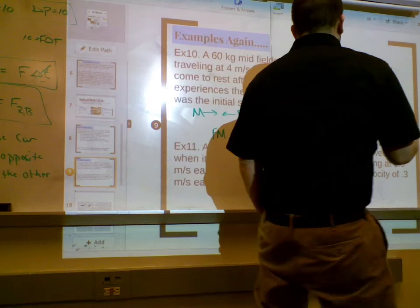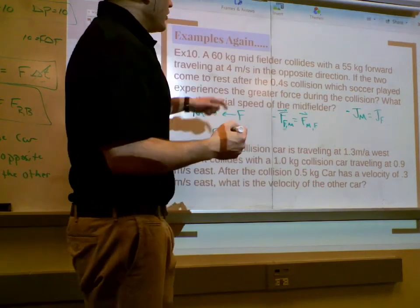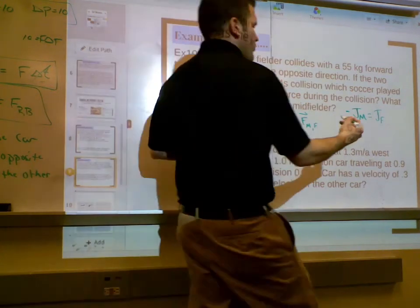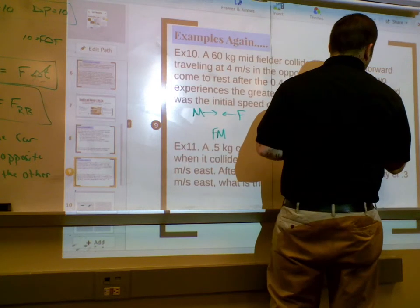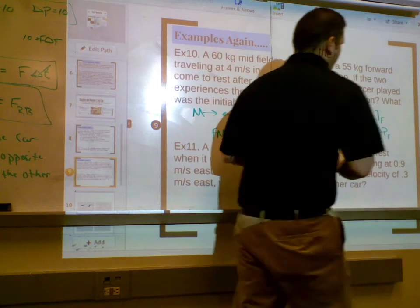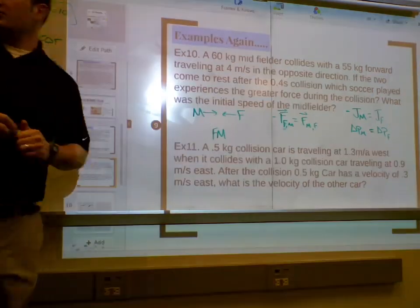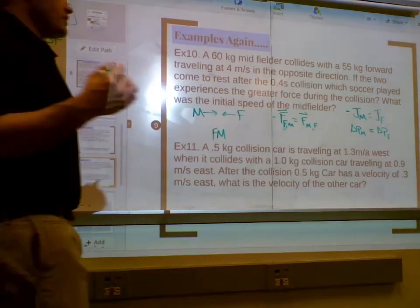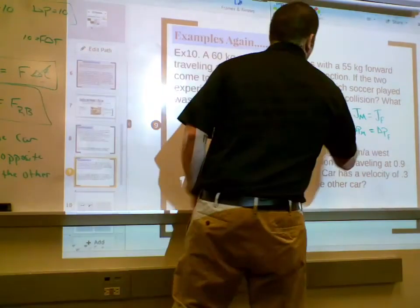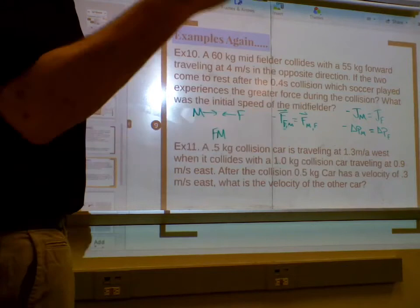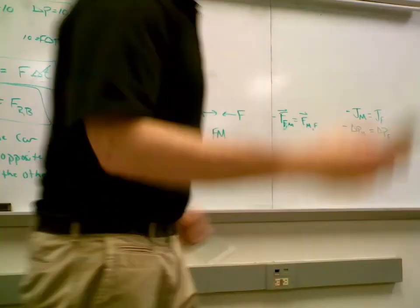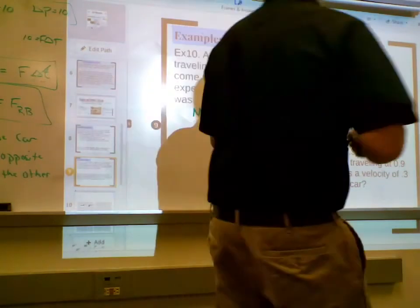The impulse on the midfielder equals the impulse on the forward. It's just one is in the opposite direction, right? So one is negative. So for the forward, impulse is also change in momentum, right? Right, guys? Impulse is also change in momentum? True. Right? So for the forward, we know their momentum before the collision. What was the forward's momentum before the collision?